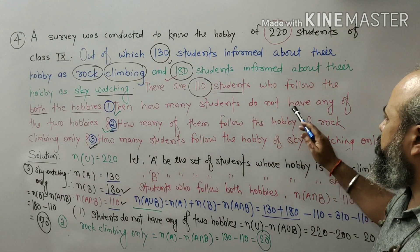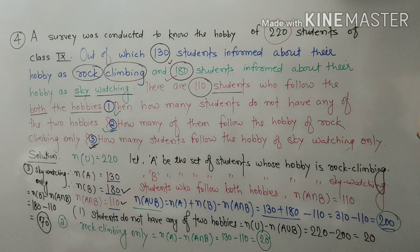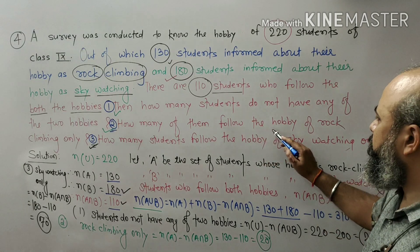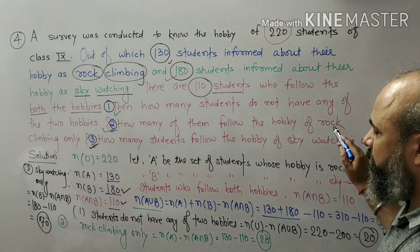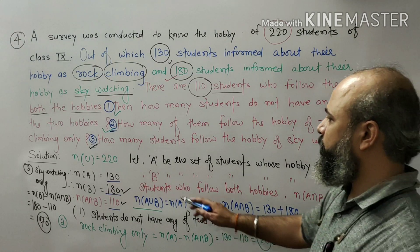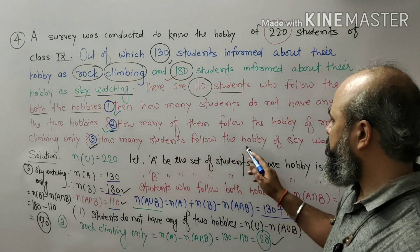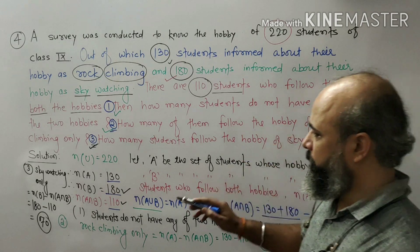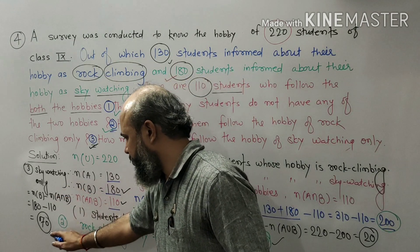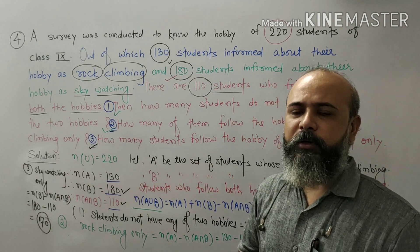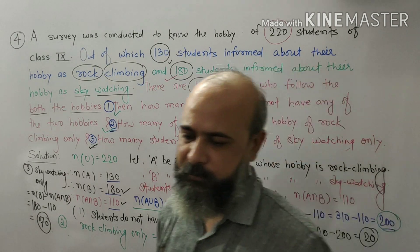So, to summarize: how many students do not have any of the two hobbies — 20 students. How many follow only rock climbing — 20 students. How many follow only sky watching — 70 students. Thank you for watching my videos. Have a nice day.